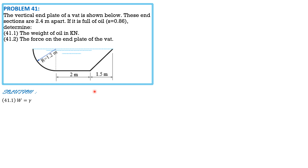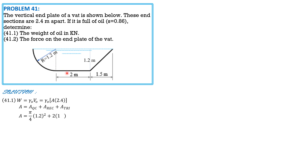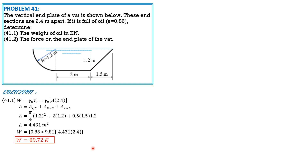For the weight, it equals the specific weight of oil times the volume of oil, where volume equals the area of the end section times 2.4. The area consists of a quarter circle, a rectangle, and a triangle. The height of the rectangle and triangle is 1.2 m (the radius of the quarter circle). Area equals (π/4)(1.2²) + (2)(1.2) + (0.5)(1.5)(1.2) = 4.431 m². Substituting: γ_oil = 0.86 × 9.81, volume = 4.431 × 2.4, giving weight of oil = 89.72 kN.